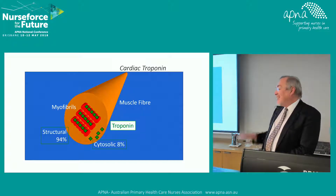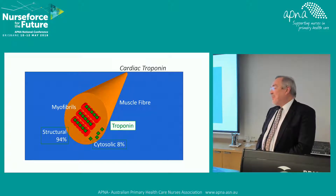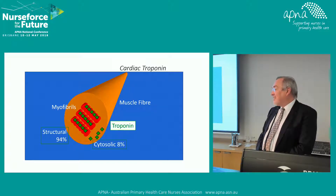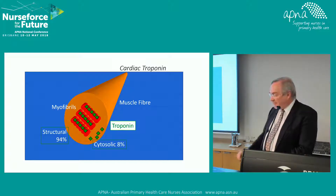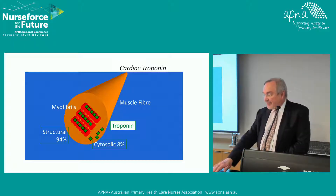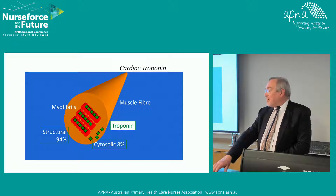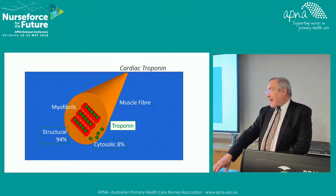Marathons are the type of things that can also cause troponin release. Which is one of the reasons that a positive troponin doesn't always show a heart attack — it just shows that something happened to the heart.